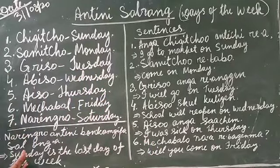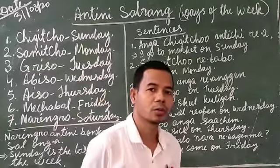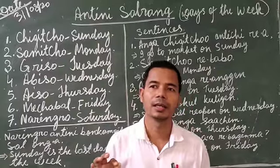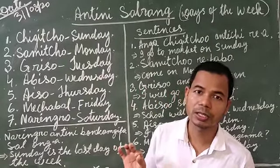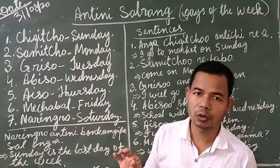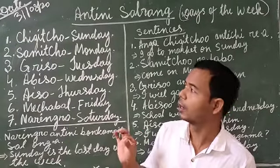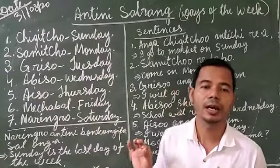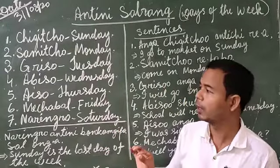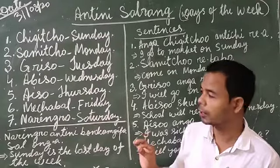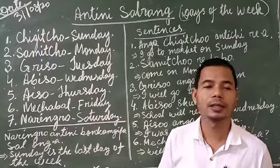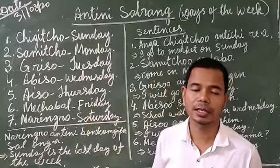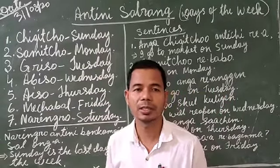You can learn the names of the days of the week. Shigucho means Sunday, samucho means Monday — you have to keep in mind. Greenso means Tuesday, abiso means Wednesday, ayiso means Thursday, mechabal means Friday, naramuro means Saturday.